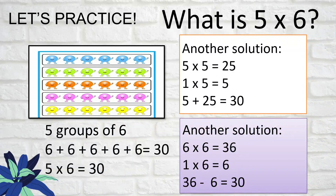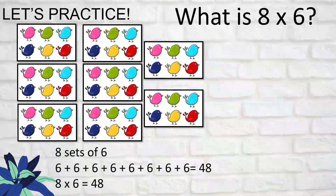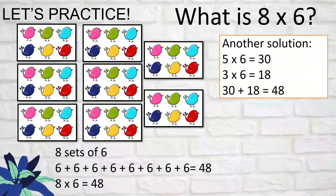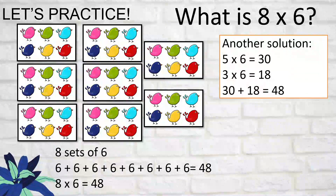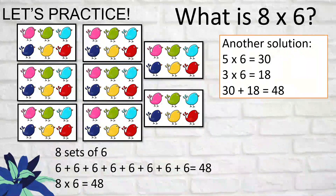Now, what is eight times six? You can draw eight groups of six and add six eight times: eight times six equals 48. Applying the same technique: if you know five times six is 30, and three times six is 18, you just add 30 and 18, which equals 48. That gives you eight times six.